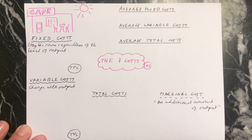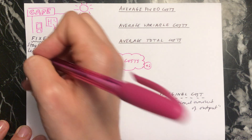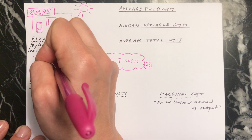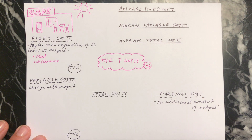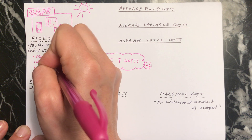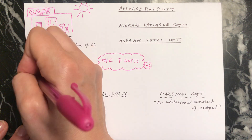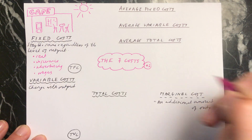For example, in your cafe your fixed costs might be paying the rent. They might also be paying your insurance — in case you give someone food poisoning, or one of your chefs drops something on their toe and they need insurance to cover them. That insurance will be paid every month or possibly once a year, and your rent will probably be paid once a month or once a year. You might also do some advertising for your restaurant, again paid monthly or annually, and also you'll be paying wages — for instance, to your manager of the restaurant.